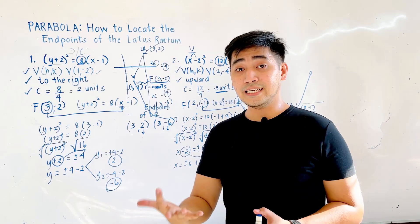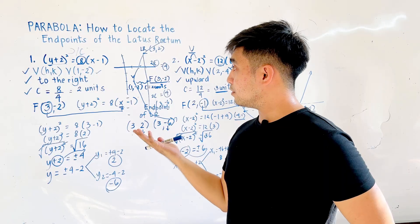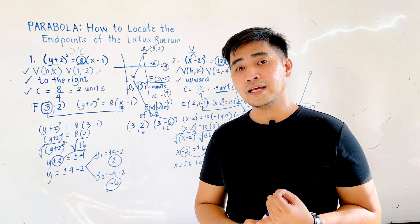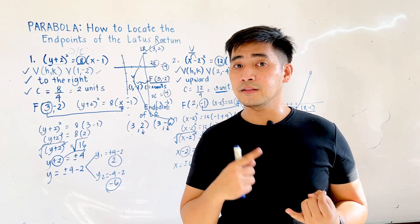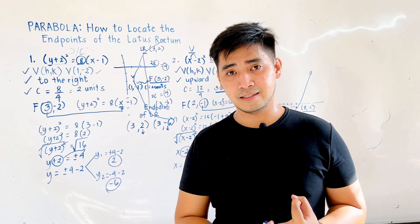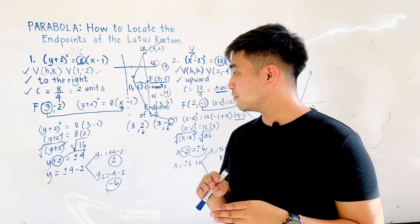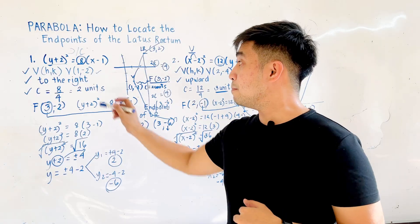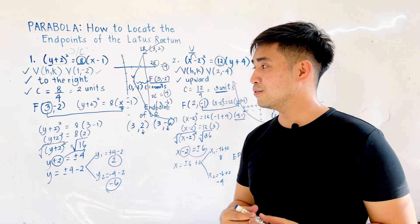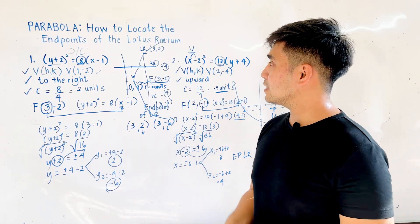To summarize the steps: start with the standard equation of the parabola, then identify the vertex. After that, locate the direction of the opening — whether up, down, left, or right. Then identify the focal distance c, and use it to find the focus. Finally, substitute the x or y coordinate of the focus into the main equation to obtain the endpoints of the latus rectum.